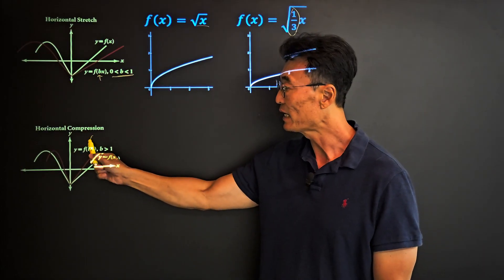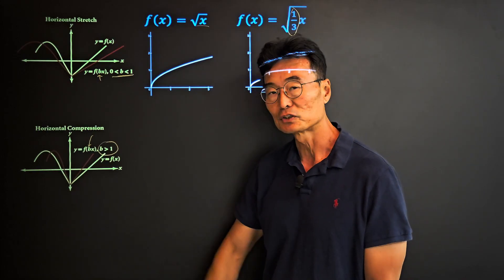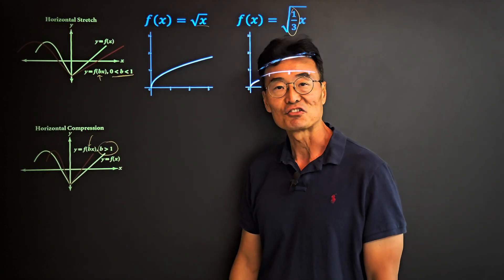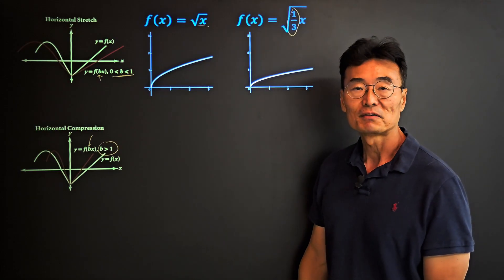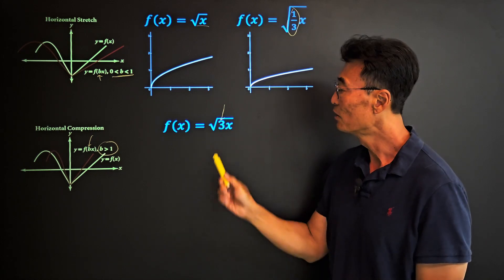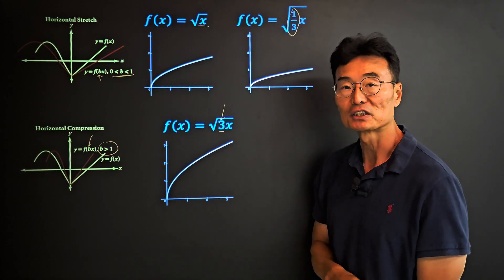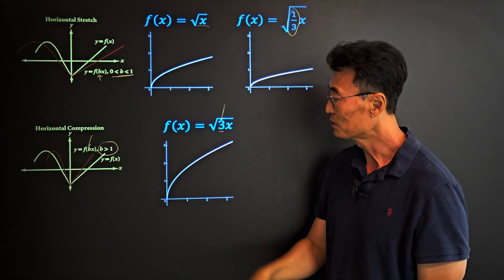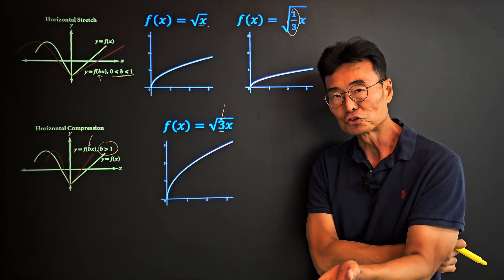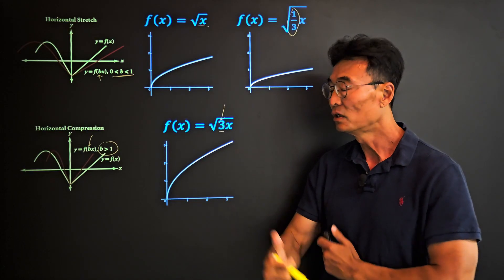The opposite is horizontal compression, where x is multiplied by b and b is greater than 1. The red graph is the one compressed sideways. Using f(x) = √x, if we multiply x by 3 — note the 3 is directly in front of x, not in front of the square root — it gets horizontally compressed. Using these transformations, you can take any parent graph and move it up, down, left, right, or stretch it vertically or horizontally.